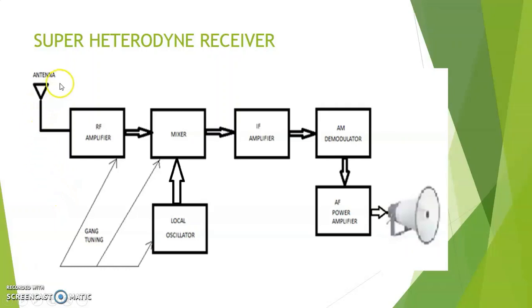This is the basic block diagram of a Superheterodyne Receiver. The antenna will pick up the incoming signals. The RF amplifier, also called as the radio frequency amplifier, will amplify the incoming signal.